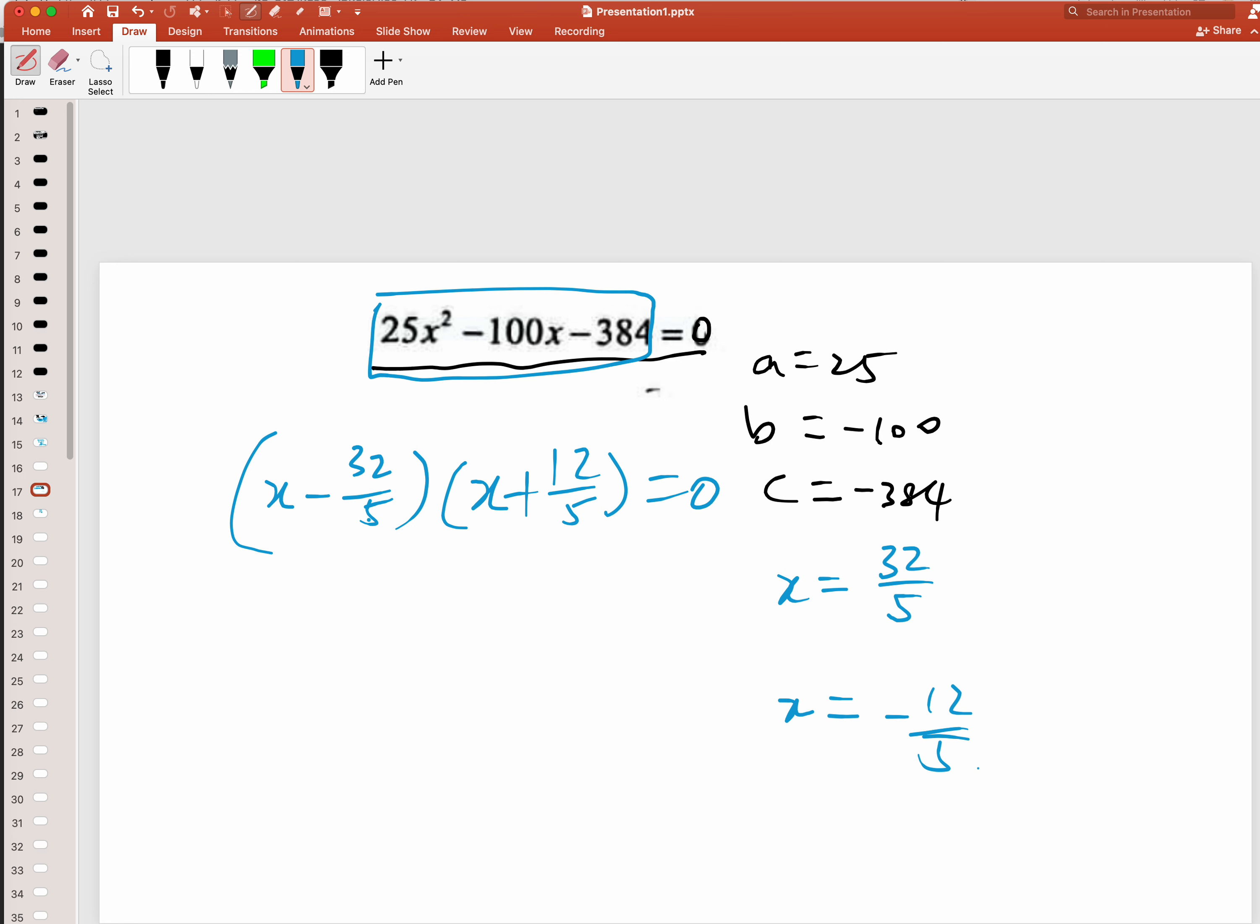Then for this one, you equate to zero using the logic of multiplication of two factors - either one is zero. So this one will give you x equals negative 12 over 5. That's how I get these two first.